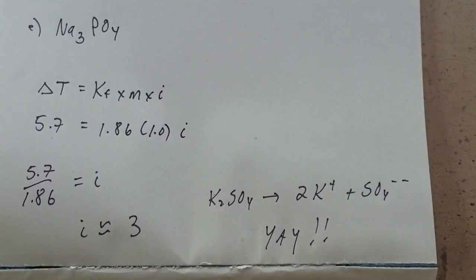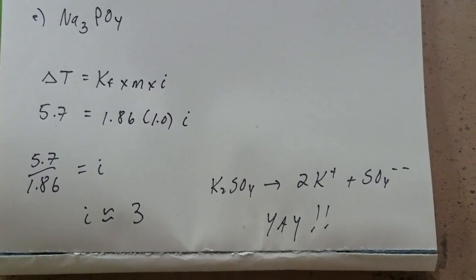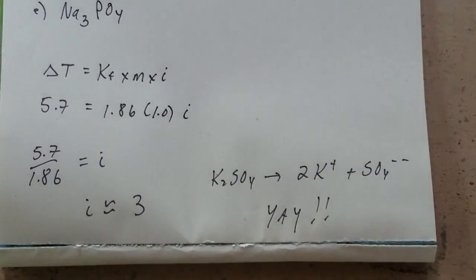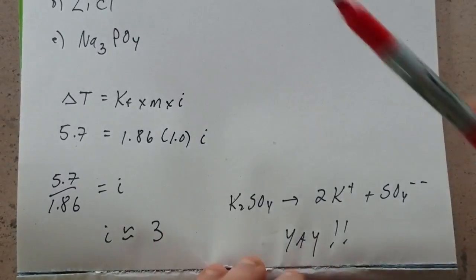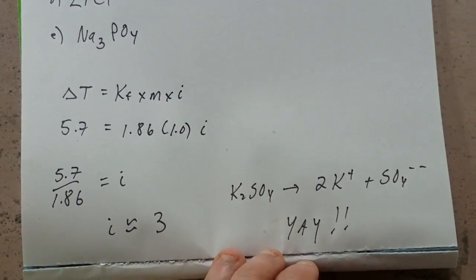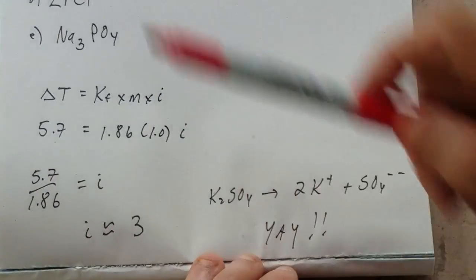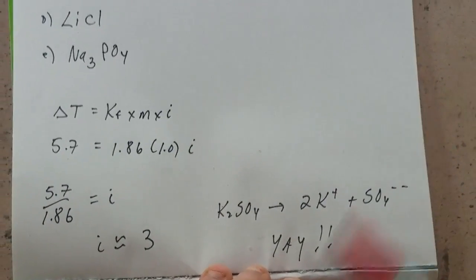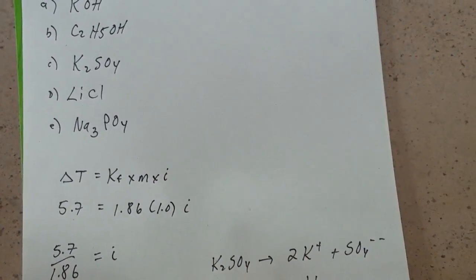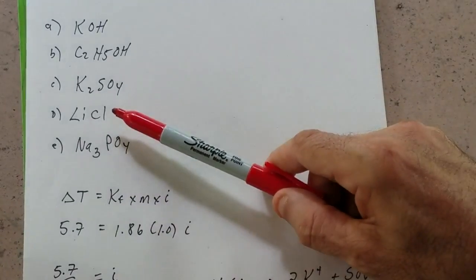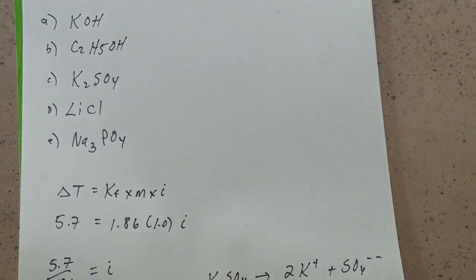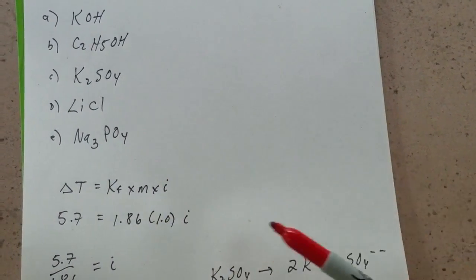So we now know the solute is going to dissociate theoretically at high dilution into three particles. Well, KOH would only break up into two particles. Ethanol is a non-electrolyte, that would only be 1. Potassium sulfate would be 3. Lithium chloride would be 2. And sodium phosphate would be 4.